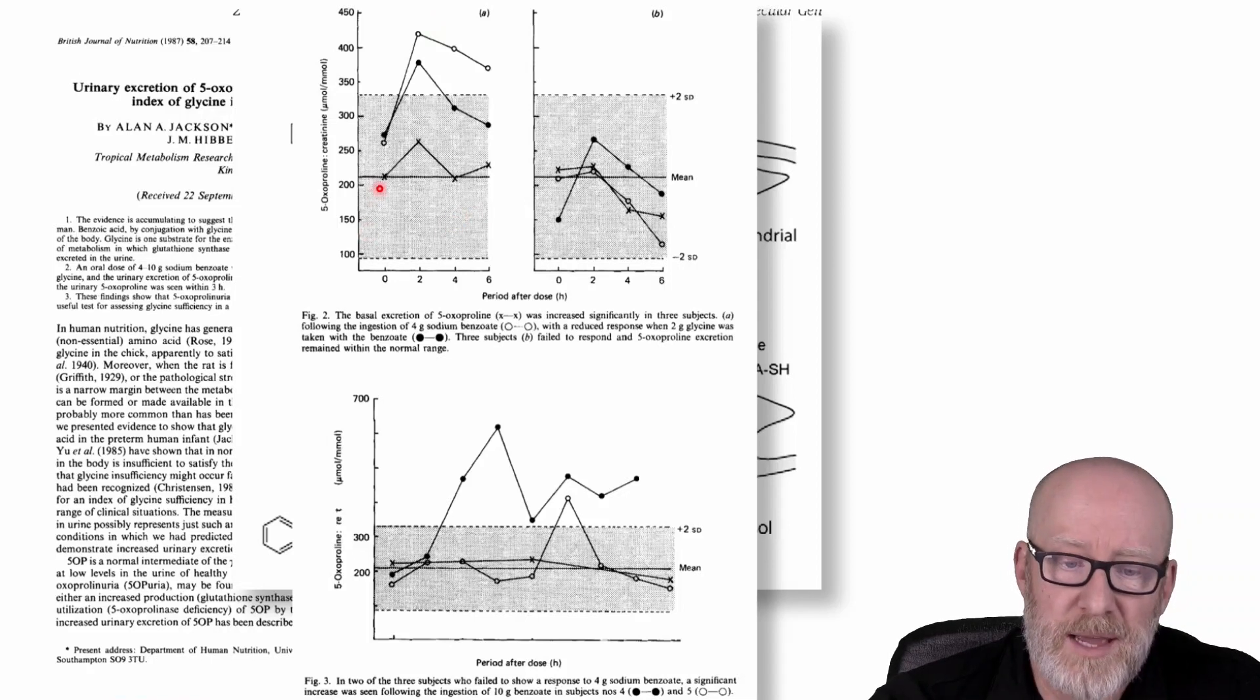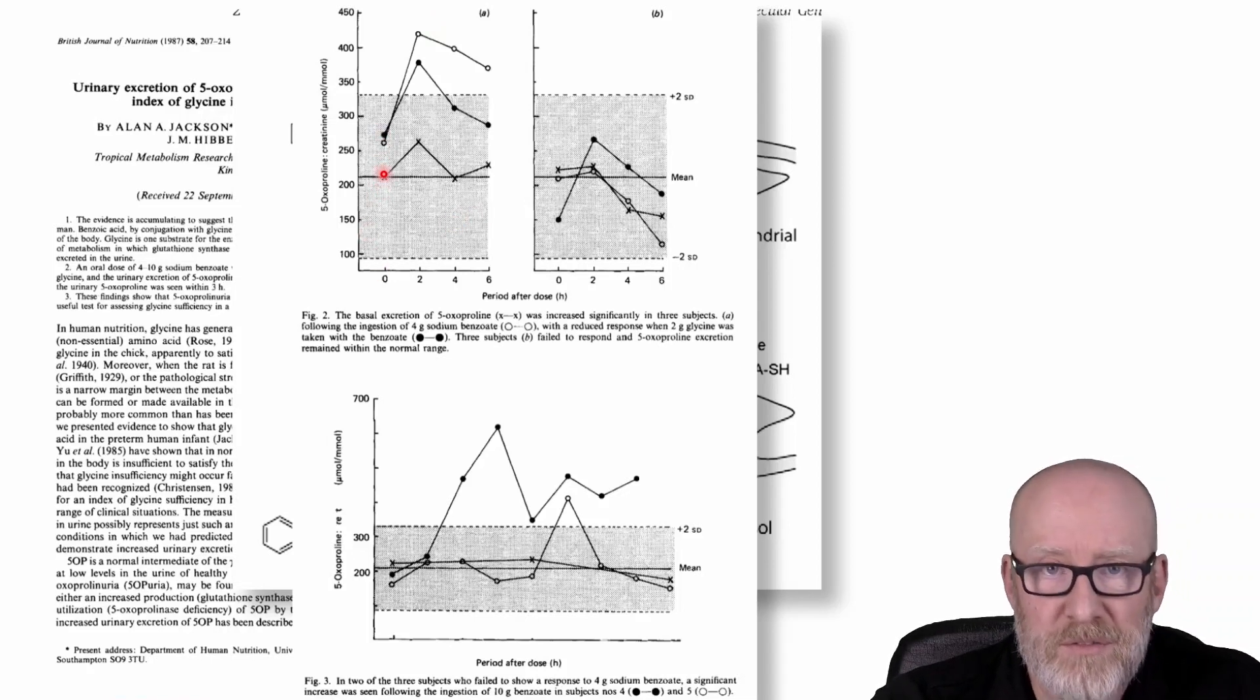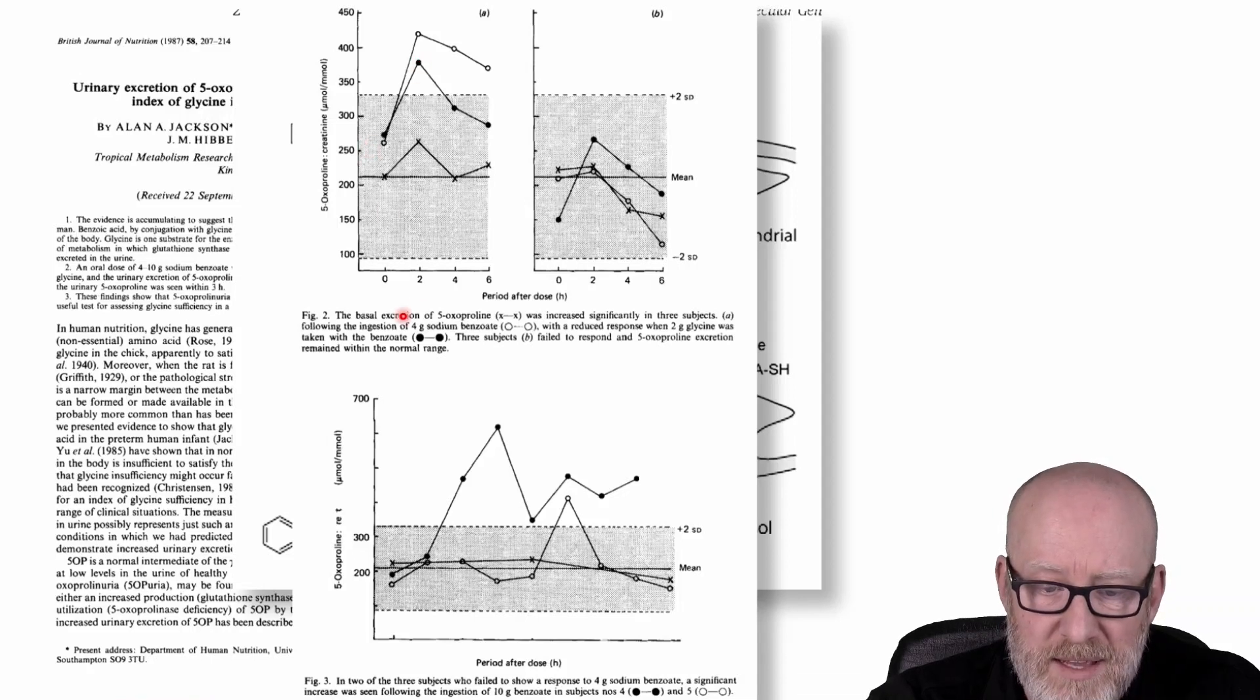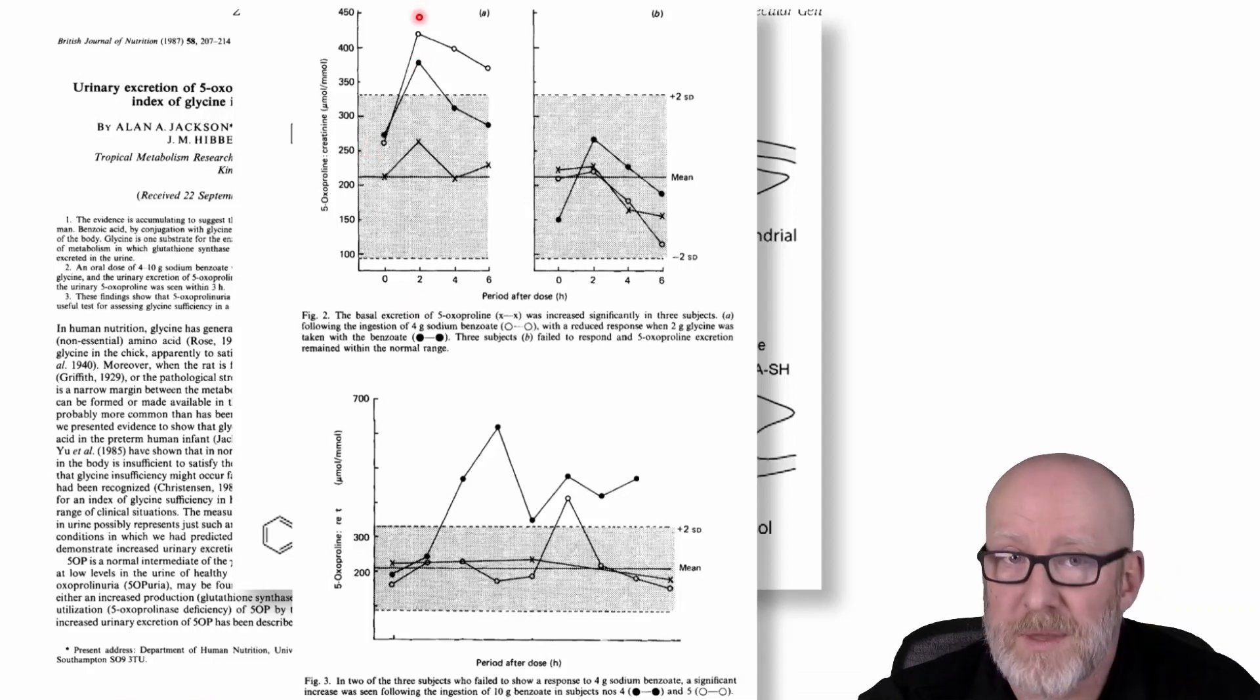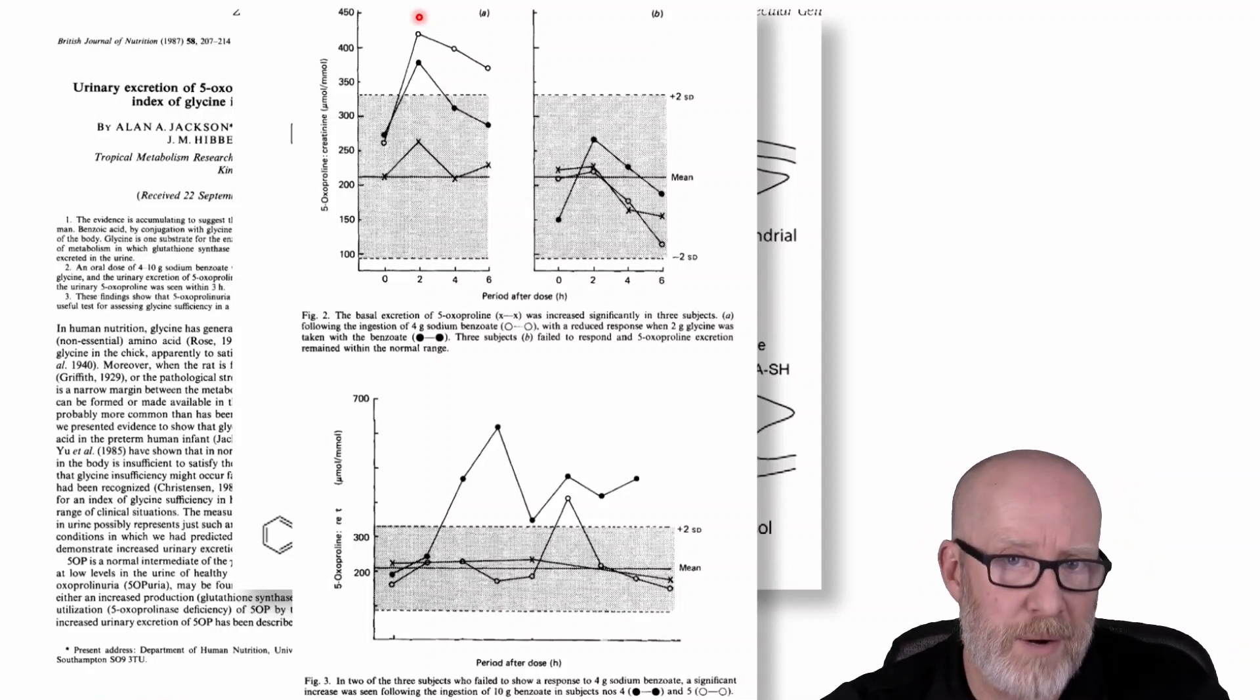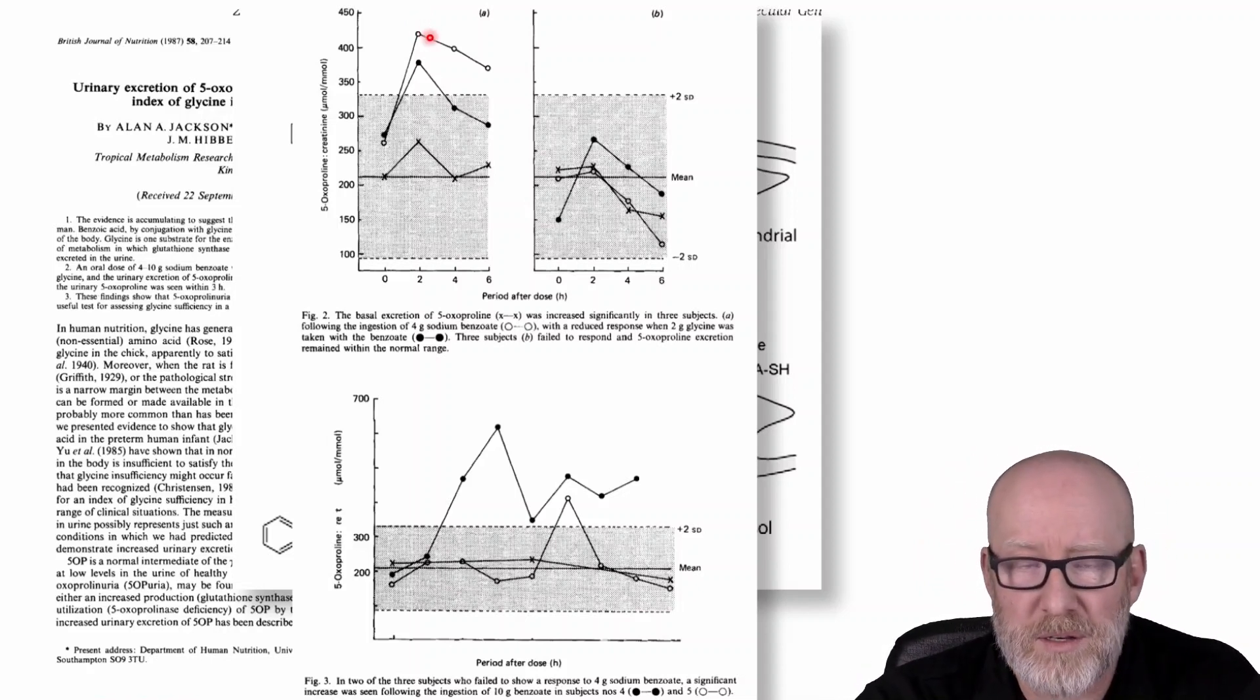So they gave four grams of sodium benzoate and here's what happened. So in this particular chart here, we're going to look at, you can see that at hour zero, here's their baseline of 5-oxyproline or pyroglutamic acid and various degrees or amounts of it. That's fine. In each one of these three cases, after two hours, it went up. So then that's showing that glycine sort of disappeared and then therefore their pyroglutamic acid went up. But what I want you to notice also is at hour four, this person's came right back to baseline.